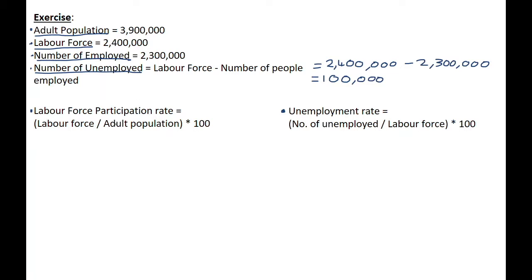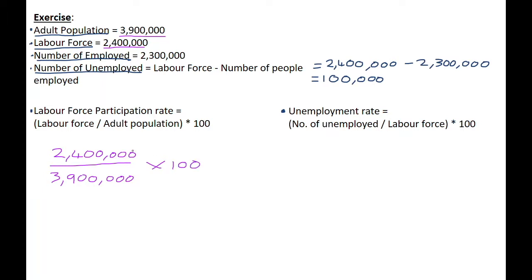Now we can work out the labor force participation rate. To calculate this, we take the number of people in the labor force — which is 2,400,000 — divided by the number in the adult population, which is 3,900,000, and multiply by 100. Working this out gives us a labor force participation rate of 61.54%.